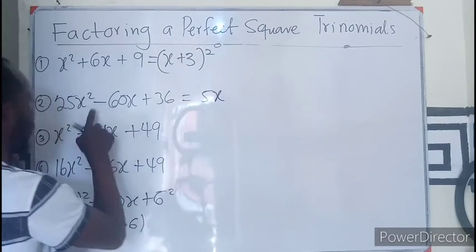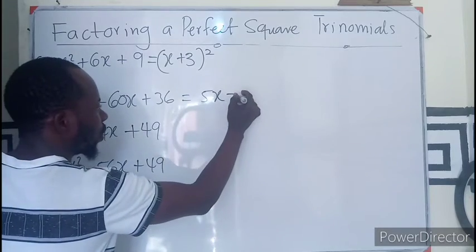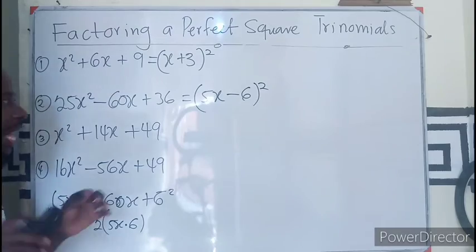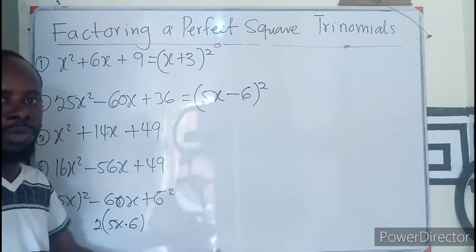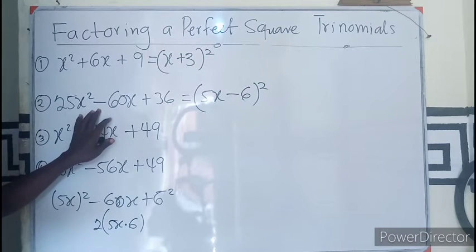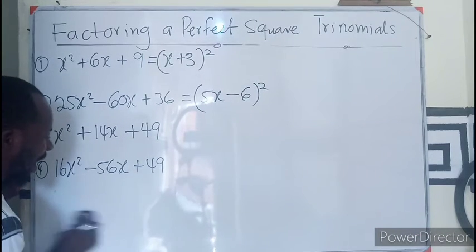...5x. We are saying that the number, the sign here, is what we use, then 6 all squared. As a perfect square trinomial, if you open this bracket, you end up getting the original.